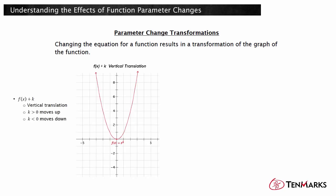f plus k will result in a vertical translation of f. Each point on the graph of f will shift vertically k units. When k is positive, the graph will shift upward, and when k is negative, the graph will shift downward.